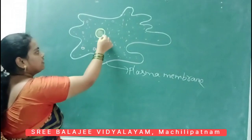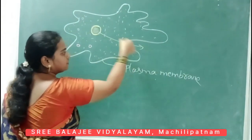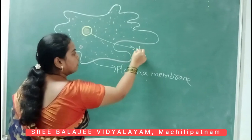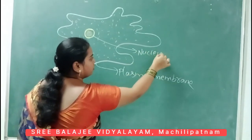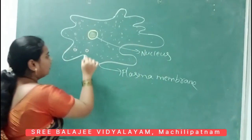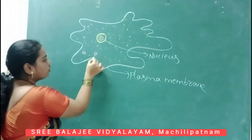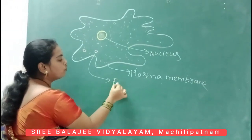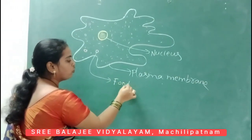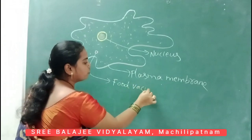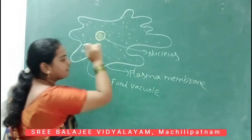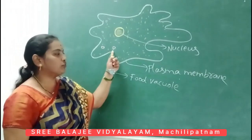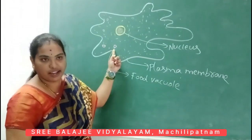And the next one — this is the round-like structure present inside the amoeba, that is the nucleus. The small round-like, bulb-like structure is called the food vacuole. What is the purpose of the food vacuole? The amoeba takes food from the outside with the help of the food vacuole.